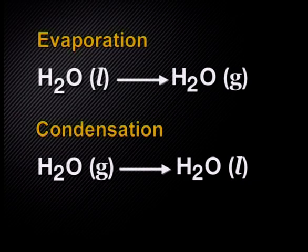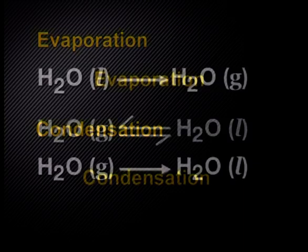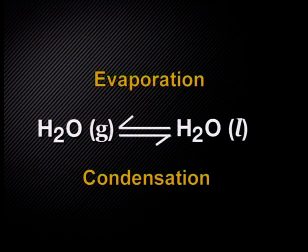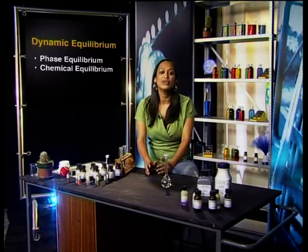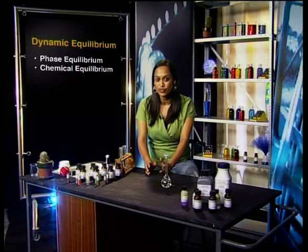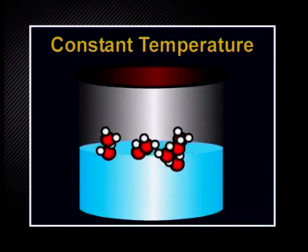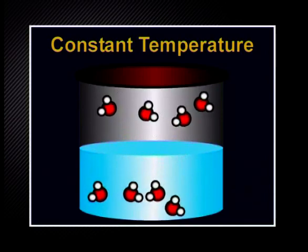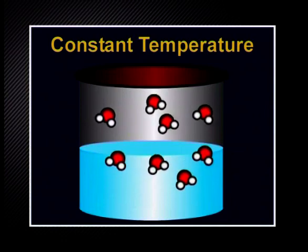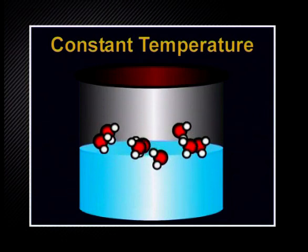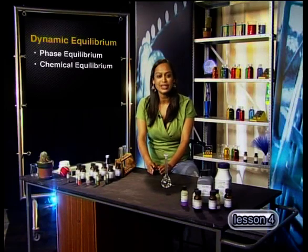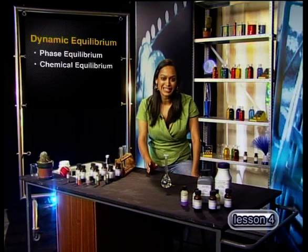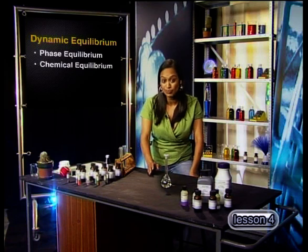We call this a phase equilibrium and represent it by combining the two equations: H₂O(liquid) ⇌ H₂O(gas). If we heat or cool the flask, we will affect the rates of the reactions. So it is important to note that phase equilibrium is established under specific conditions. Phase equilibrium is the first example of a dynamic equilibrium that we will explore.